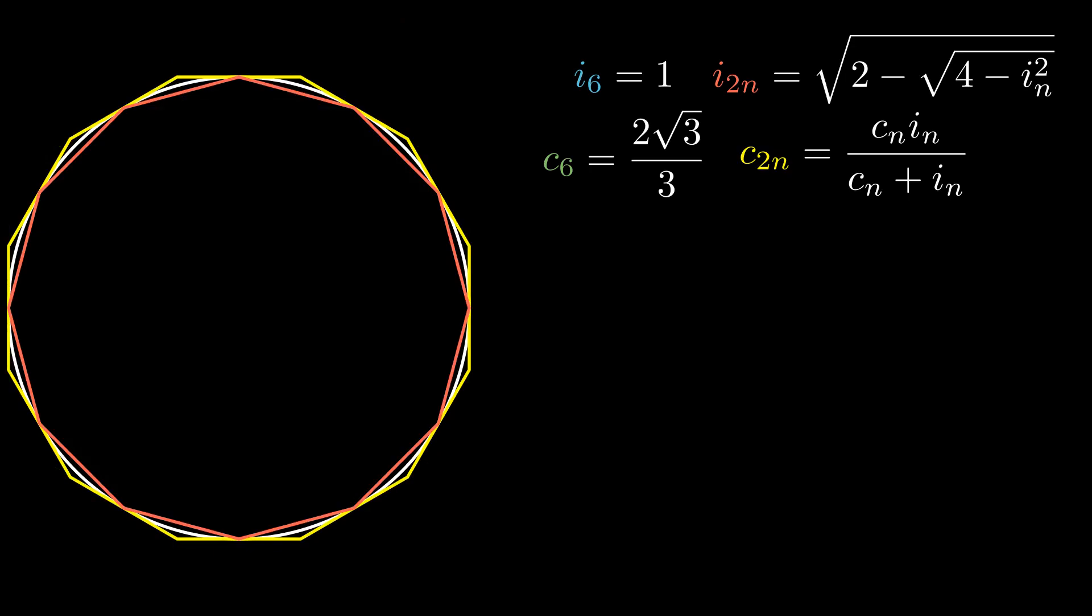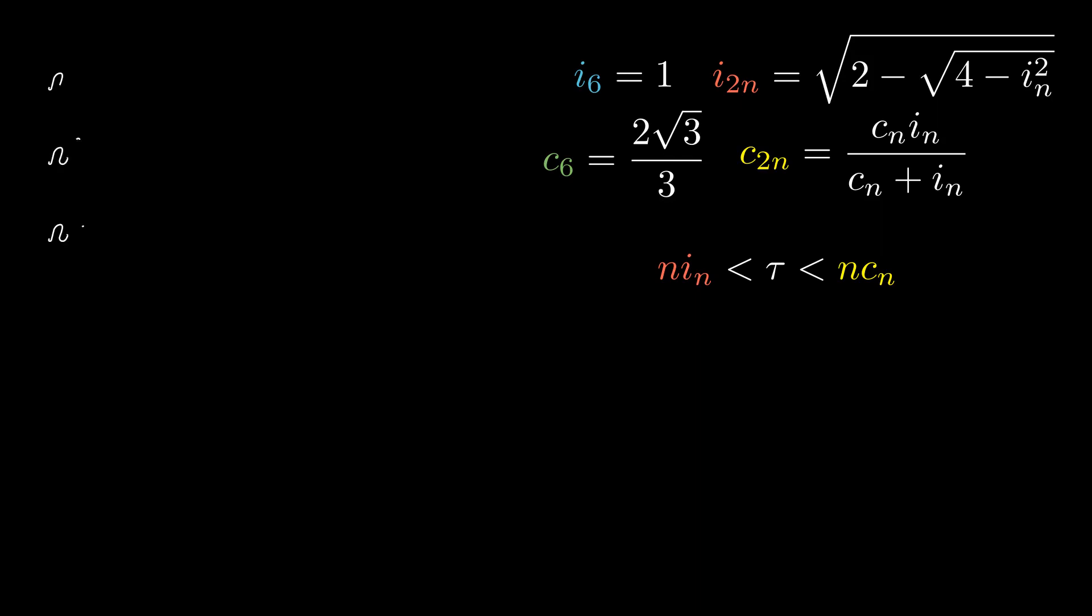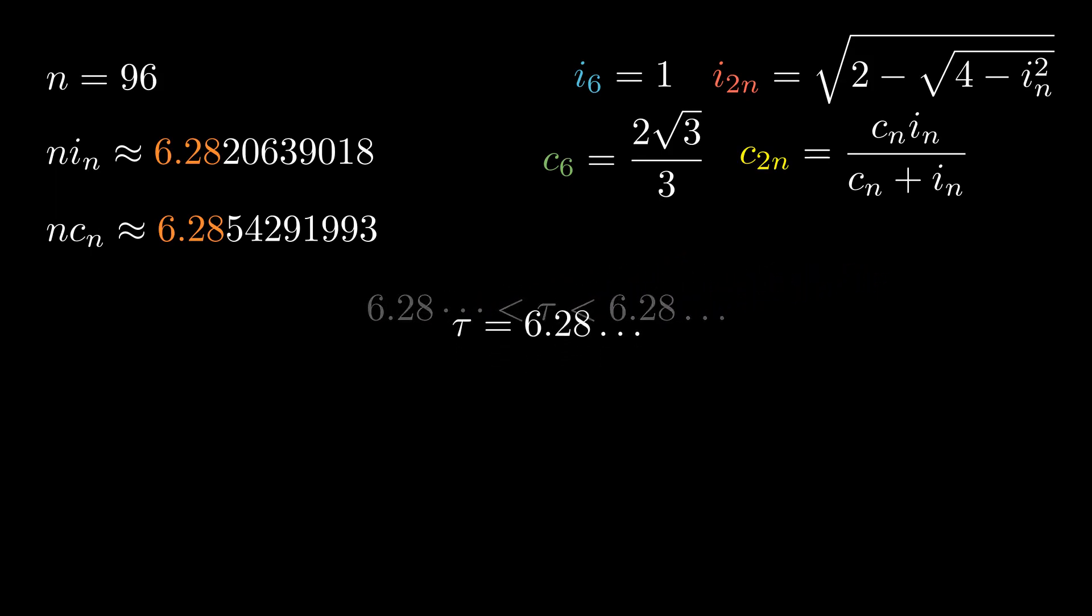Because the inscribed polygon's perimeter is less than the circumference is less than the circumscribed polygon's perimeter, we can express this relation by this inequality. Let's try using this method to approximate tau to the second digit after decimal. The perimeters of the polygons match up to two decimal places when we reach n equals 96. We can thus conclude that tau must be approximately equal to 6.28.